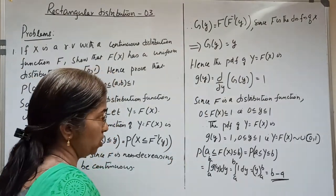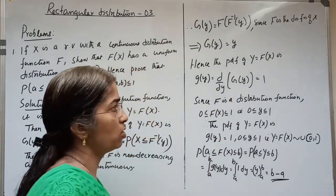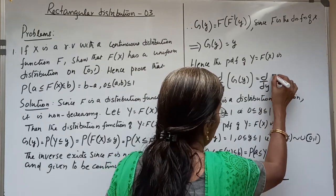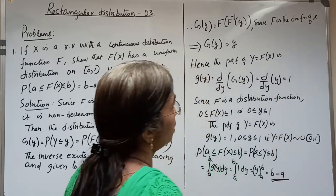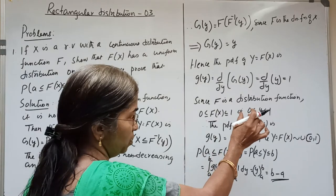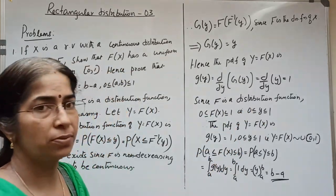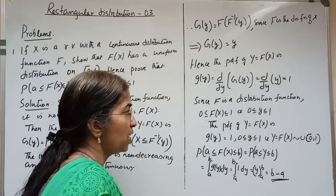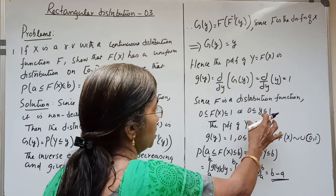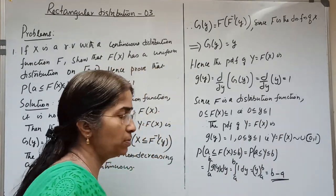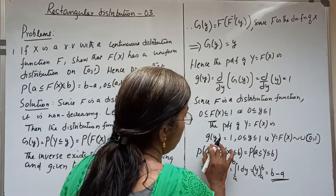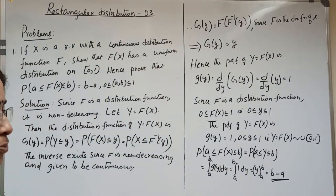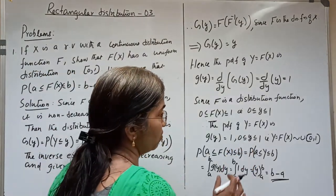The PDF is the derivative of the distribution function. Let us write it as small g(y) = d/dy of G(y) = d/dy of y = 1. Since f is a distribution function, we have 0 ≤ F(X) ≤ 1, which is the property of a distribution function. That is, 0 ≤ y ≤ 1. Hence we have g(y) = 1, for 0 ≤ y ≤ 1, which is the PDF of a rectangular distribution on (0,1).